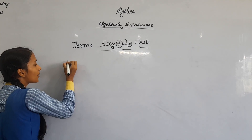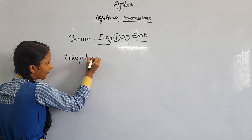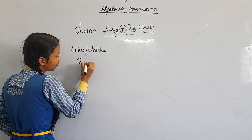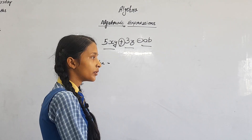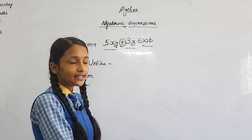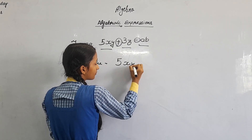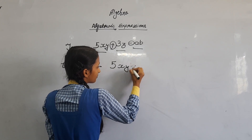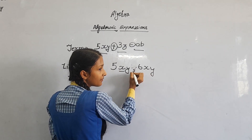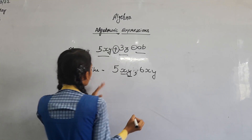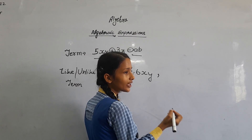Then we will come to our next topic: like term and unlike term. Like terms are those whose literals are the same. For example, here 5x is the same and y is the same, so here is a like term. We will also get an example of a fraction because fractions are also included in Algebraic Expression.